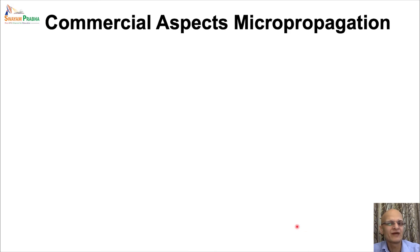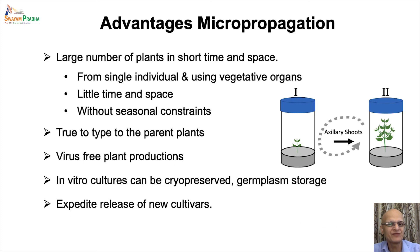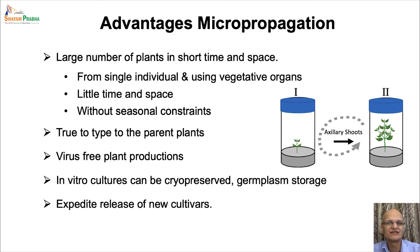Micropropagation can reduce the time between selection and release of new cultivars or new varieties. Further, the amount of plant material processed through quarantine and released from quarantine evaluation is very limited, and hence micropropagation can help in expediting the process of new crop introductions after passing through quarantine. It can be particularly useful for very slow-growing plant species or species that show resistance to conventional propagation practices.